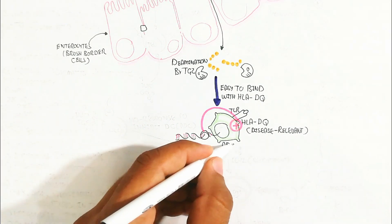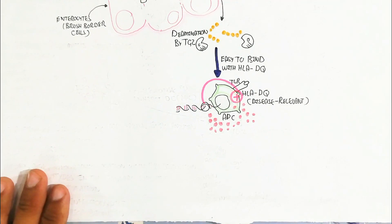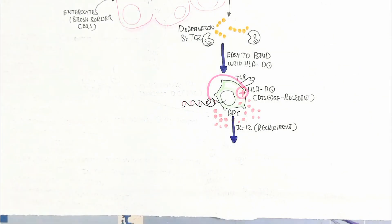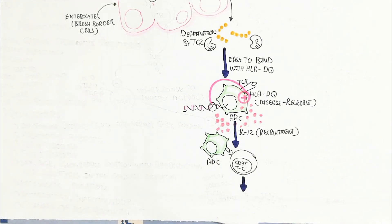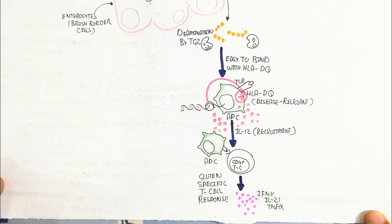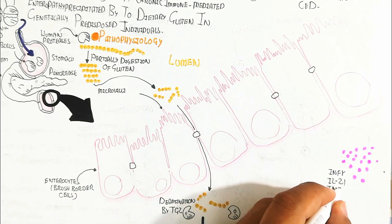The antigen-presenting cell or macrophage is activated and produces interleukin-12, recruiting naive T cells. These naive T cells proliferate into CD4 T helper cells and CD8 cytotoxic T cells. The CD4 T helper 1 cell interacts with naive B cells and produces interferon-gamma, interleukin-21, and tumor necrosis factor-alpha, creating a gluten-specific T cell response leading to GIT lesion.